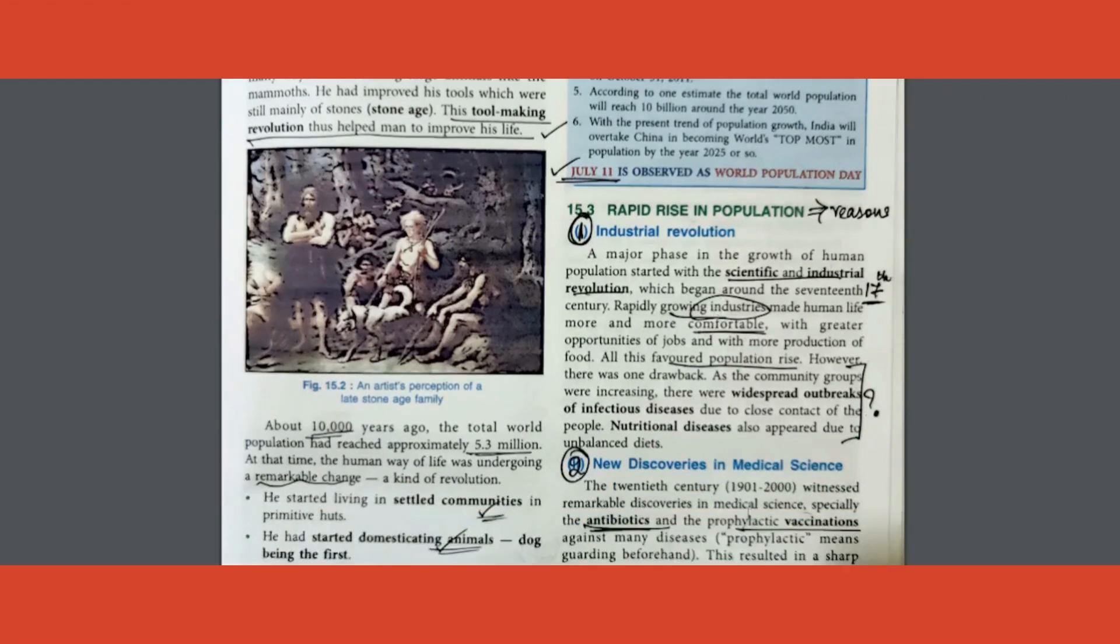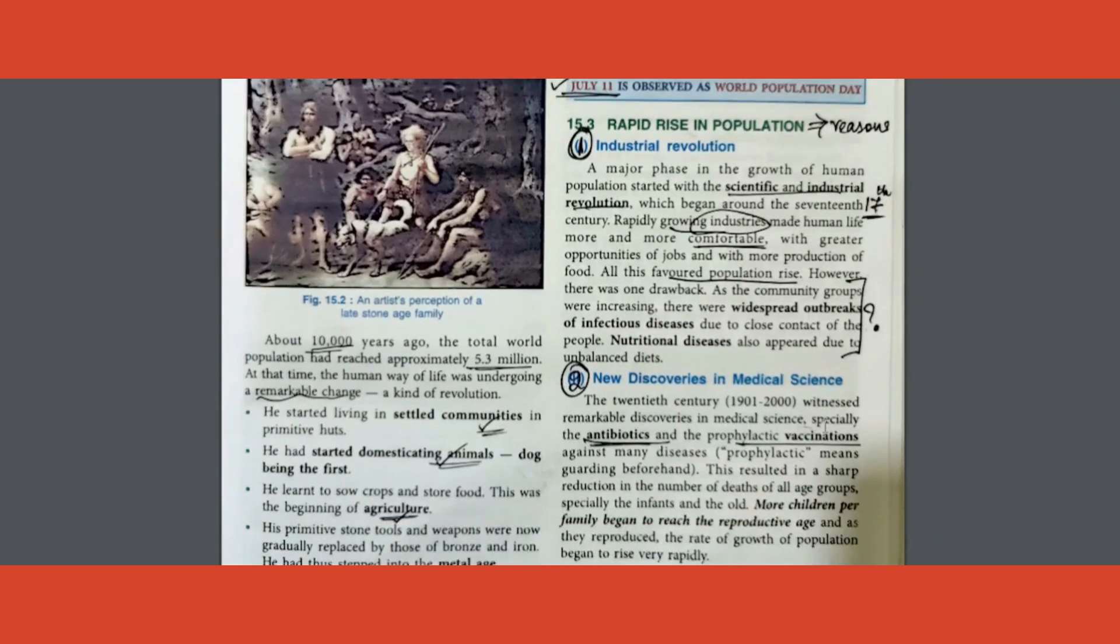What are the reasons? Under the reasons, two reasons are given. One is industrial revolution, another is new discoveries in medical science. Under industrial revolution, scientific and industrial facilities became more comfortable and favored more and more population. Under medical science, antibiotics and vaccinations developed which helped in increasing the life expectation of all the children and adults, therefore it increased the population.